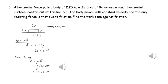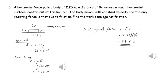Before we can work out the work done against friction we need to find the magnitude of the friction. We can resolve vertically to find the normal reaction, and then since the object is moving we can use F equals μR to find the magnitude of the frictional force. The work done against friction is then just the product of the magnitude of the frictional force multiplied by the distance travelled.